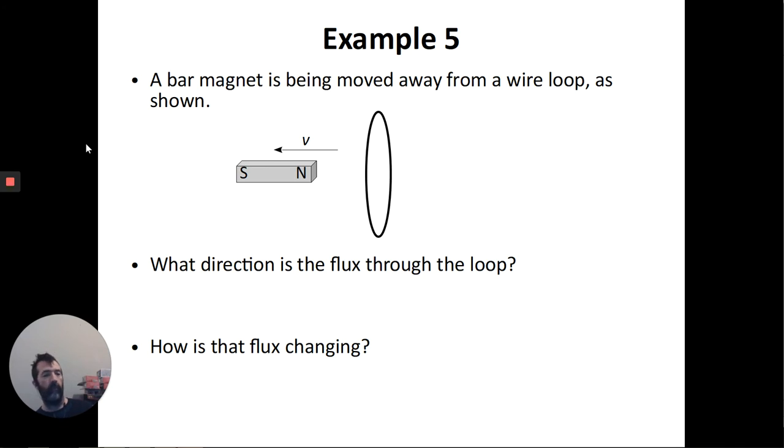I'm going to get a little trickier now. This one has a bar magnet being pulled away from the loop. I want to know about the flux through the loop. You could probably guess the second question, which is that the flux has to be decreasing. Since the further away you get from a magnet, the weaker the field gets. So if I'm dragging that magnet away from the loop, the field at the loop is going to be getting weaker. So that means the flux has to be decreasing in magnitude. But what about the direction?